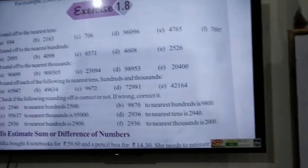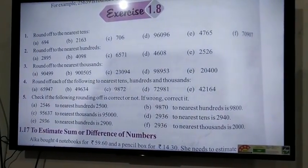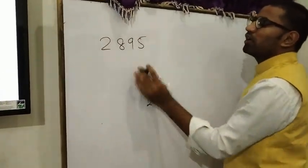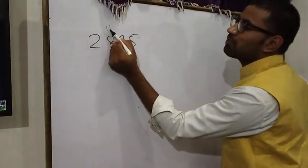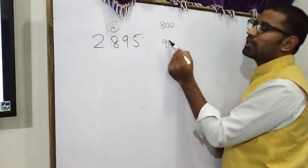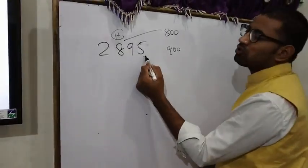Next topic: round off to nearest hundred. You will round off 2,895. The answer is 800 or 900, and here we see tens place, which is 95.